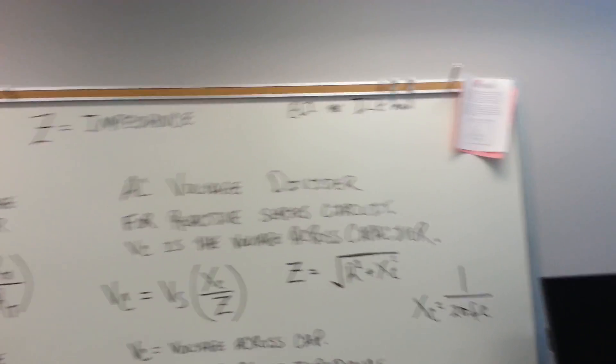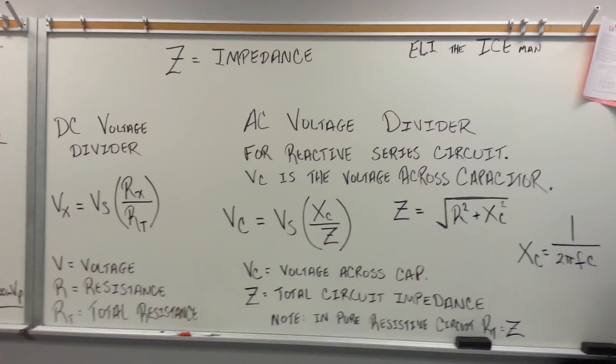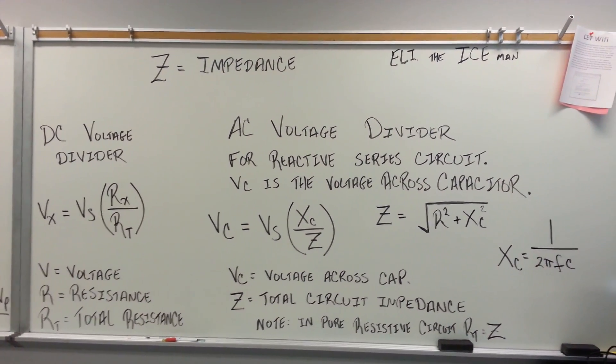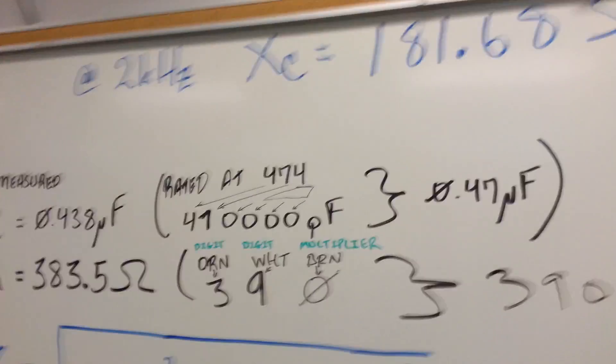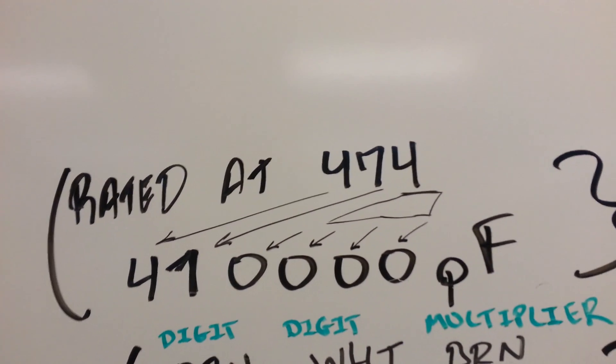Now when you start getting into AC circuits, we're dealing with impedance rather than just total resistance. I did go ahead and calculate the impedance of the circuit. And the first thing I did was I looked at my capacitor. It was a 474.